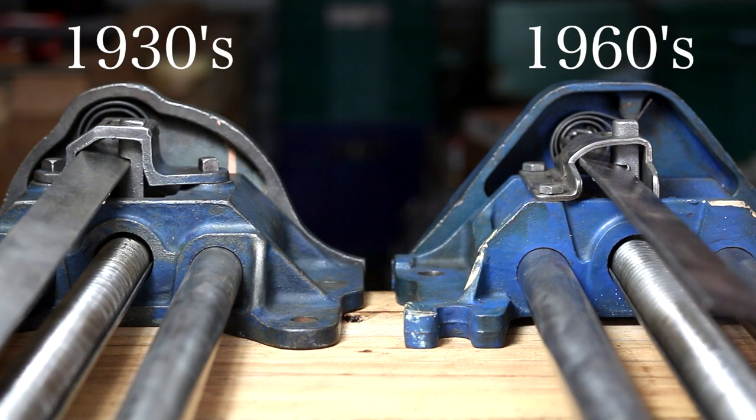Another difference we can see in the 1960s version is the thickness of the baseplate.